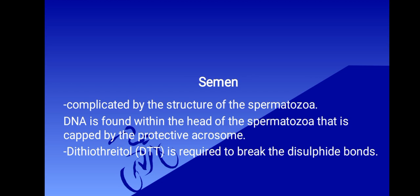A spermatozoa has a nucleus which is in the head, and it's covered by the acrosome. DNA is found within the head of the spermatozoa, since that's where the nucleus is, and is protected by the acrosome, which is rich in the amino acid cysteine. A large number of disulfide bridges form between the cysteine residues in the acrosome, and proteinase K — a general protease — cannot break these disulfide bonds, which reduces the efficiency of extraction. Therefore, we need to add DTT, which is a reducing agent that will break the disulfide bonds and greatly increase the release of spermatozoa DNA.